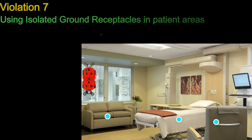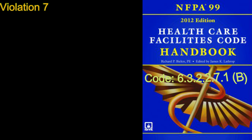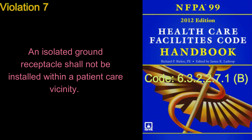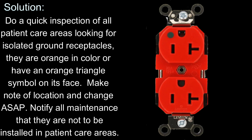Number 7: Using isolated ground receptacles in patient areas. Isolated ground receptacles have been found in patient care areas. Some say the system is on isolated power so they used isolated ground receptacles. However, the primary protection for a patient is the ground going back to the reference ground bus whether on grounded power or isolated power. On isolated power, the line isolation monitor is monitoring any path going to ground. If equipment is plugged into a receptacle that is not referenced to earth ground, the LIM will not be able to monitor any fault that may potentially be going to ground. Code 6.3.2.2.7.1 B — an isolated ground receptacle shall not be installed within a patient care vicinity. Solution: Do a quick inspection of all patient care areas looking for isolated ground receptacles. They are orange in color or have an orange triangle symbol on their face.